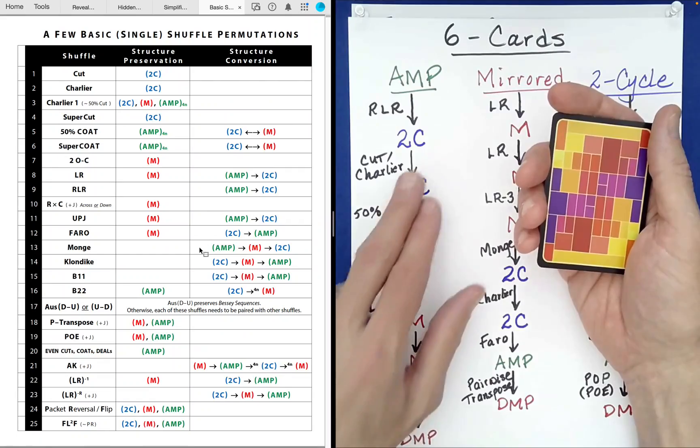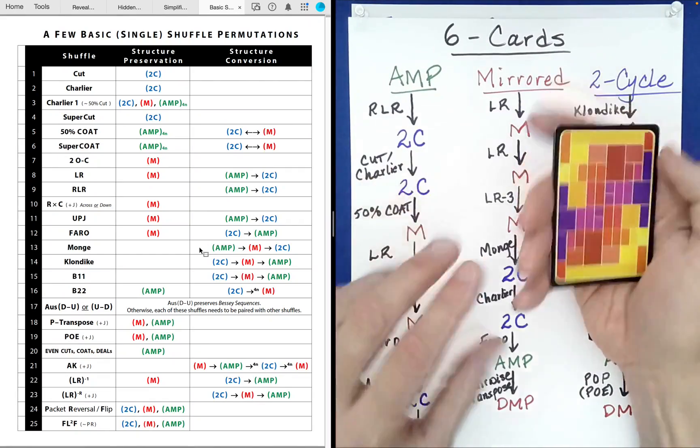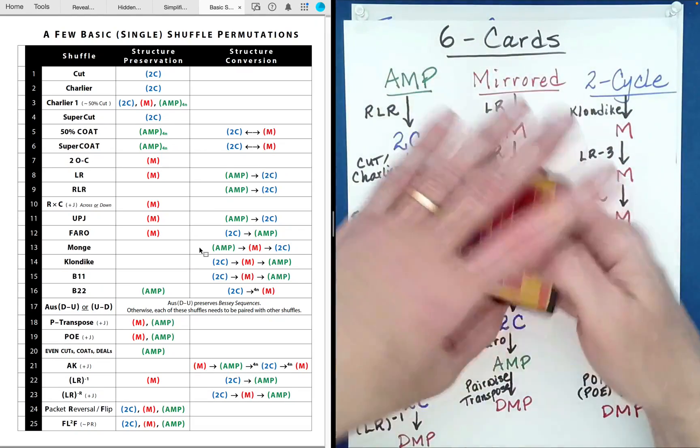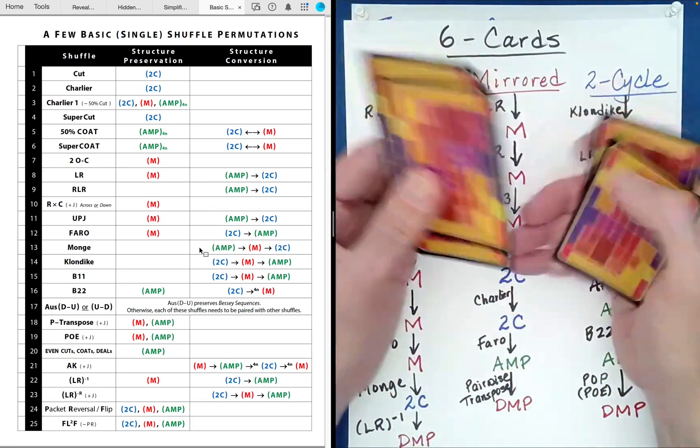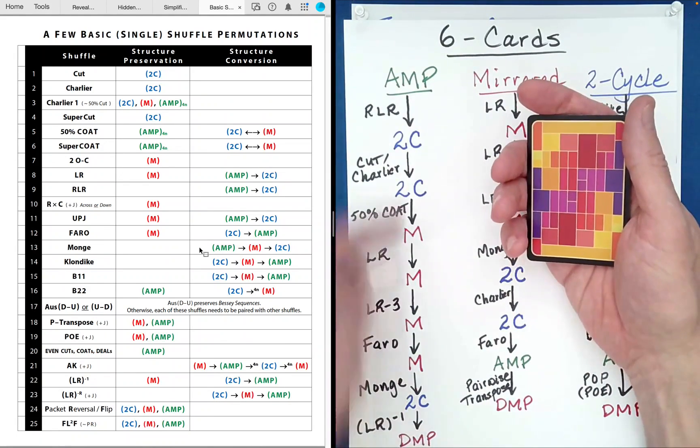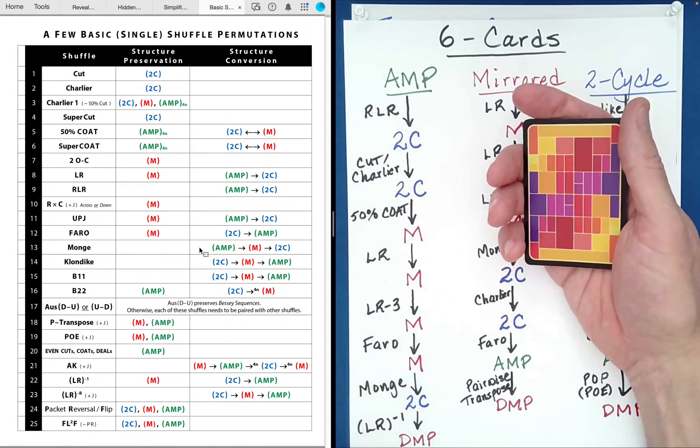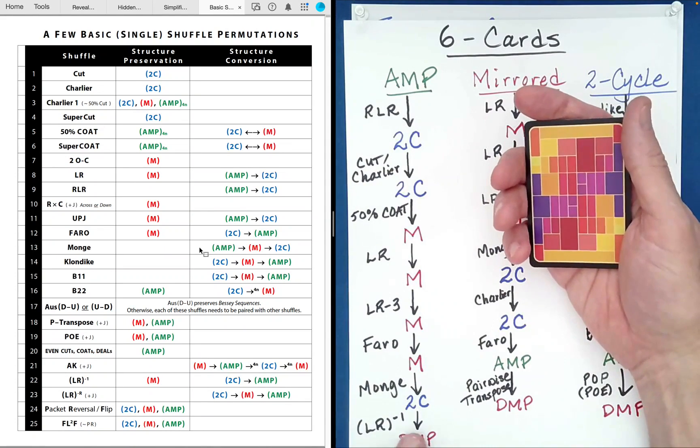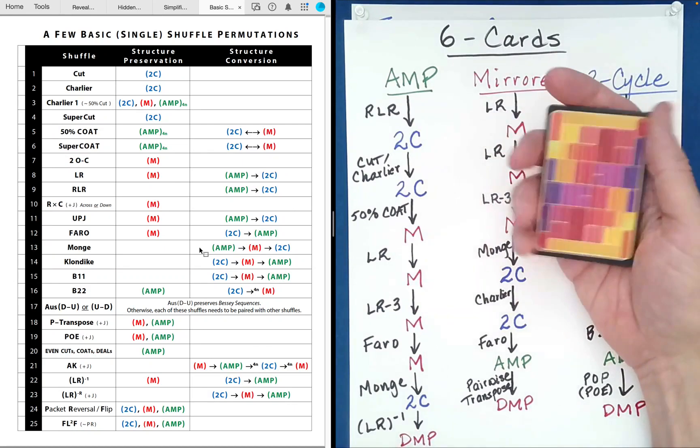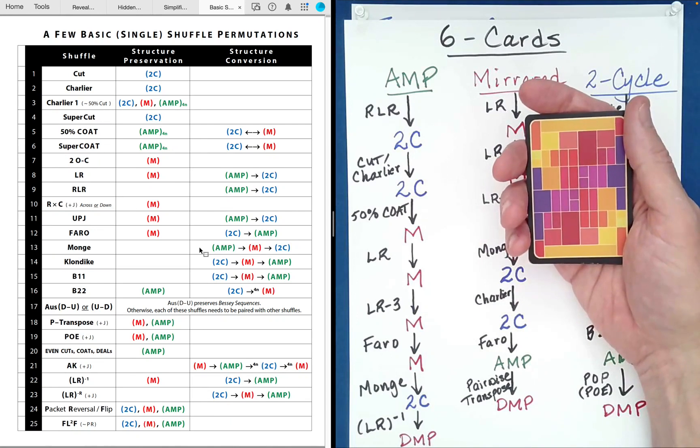Now that it's a two-cycle, if you wanted to, you could cut it. You could do some charlie shuffles. You know, this top to bottom, bottom to top. Like that. Okay? But let's go ahead and just finish this particular column here of shuffles. Okay, now we're going to finish by converting this two-cycle to something that's called a DMP.